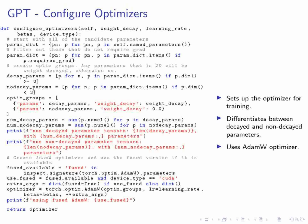The configure_optimizers method sets up the optimizer for training. We pass weight_decay, learning_rate, betas, and device_type as arguments. Parameters requiring gradients are divided into decay and no-decay groups based on their dimensionality. The decay parameters include all weight tensors in matmuls and embeddings, while the no-decay parameters include biases and layer norms. The AdamW optimizer is created with these optimization groups, learning rate, and betas. If available and the device is CUDA, the fused version of AdamW is used.